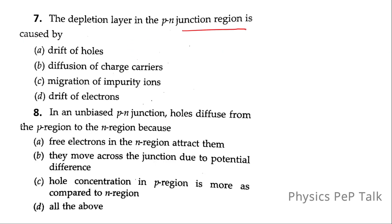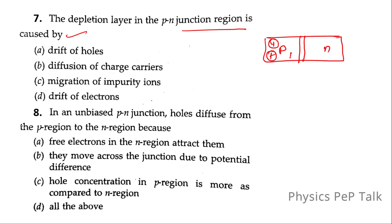The depletion region in a P-N junction is caused by: consider a P-N junction — this is P, this is N, this is the depletion region. On the P-side, holes are more compared to electrons; on the N-side, electrons are more. Electrons diffuse to the P-side and holes diffuse to the N-side — this forms the depletion region. Drift of holes only — false. Diffusion of charge carriers — this is a general and correct statement. Migration of impurity ions — false. Drift of electrons only — false. So option B, diffusion of charge carriers, is the correct answer.